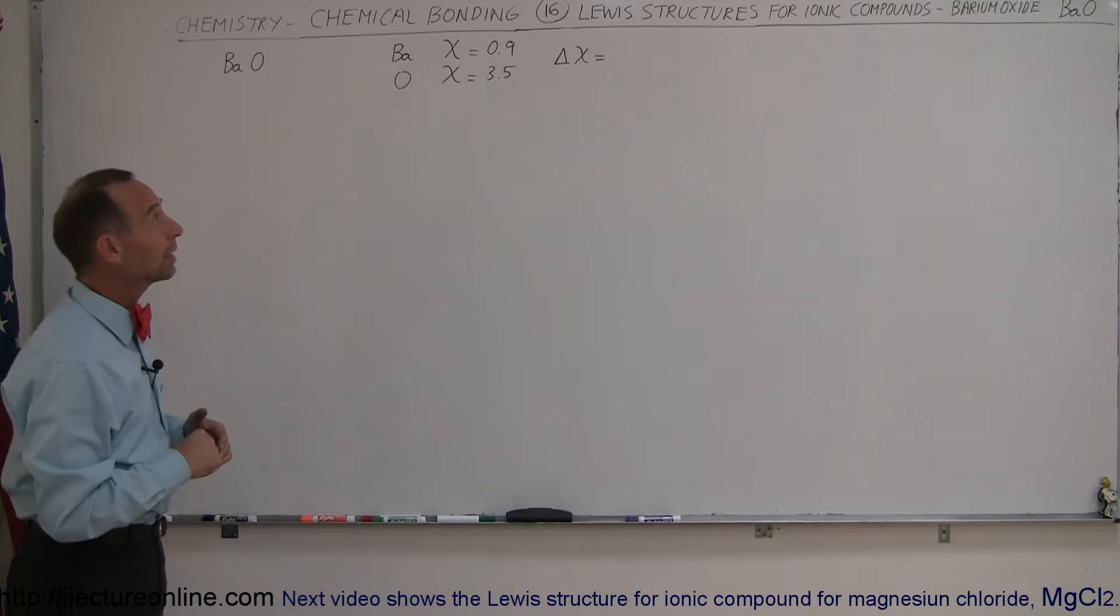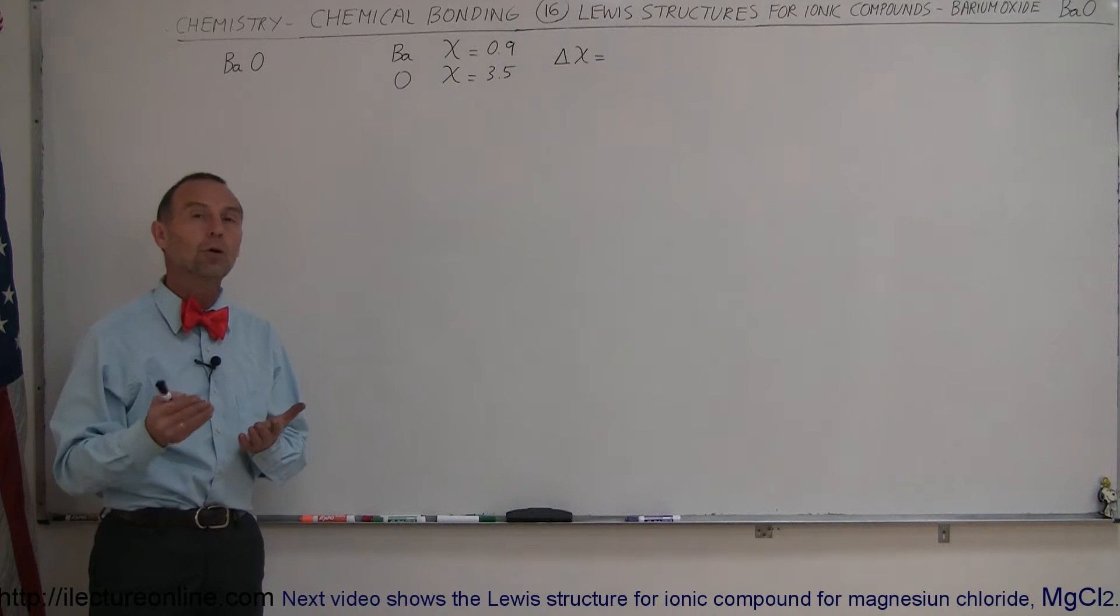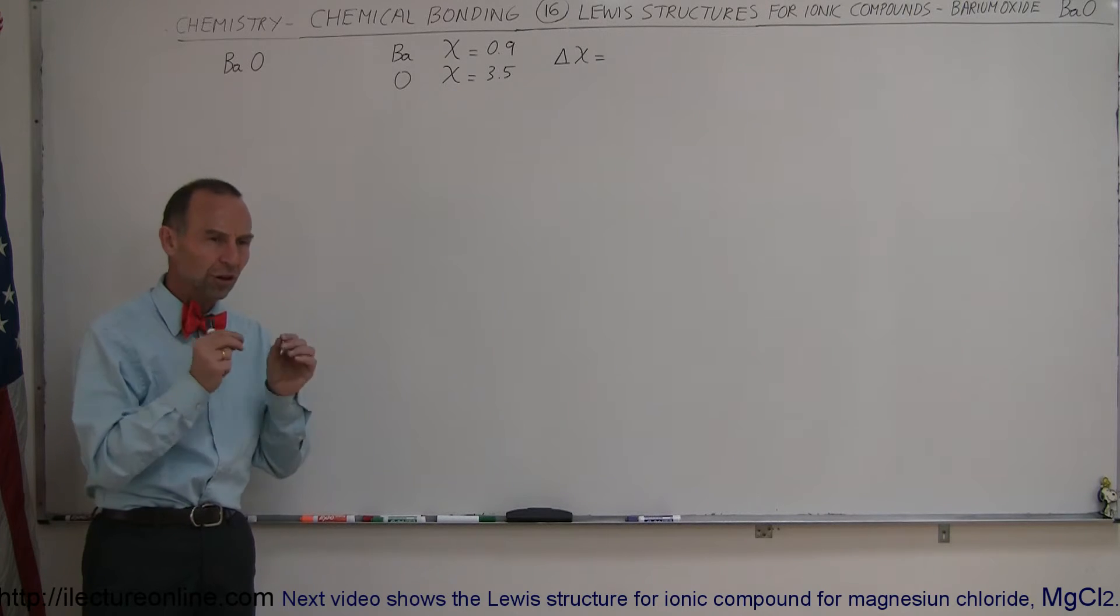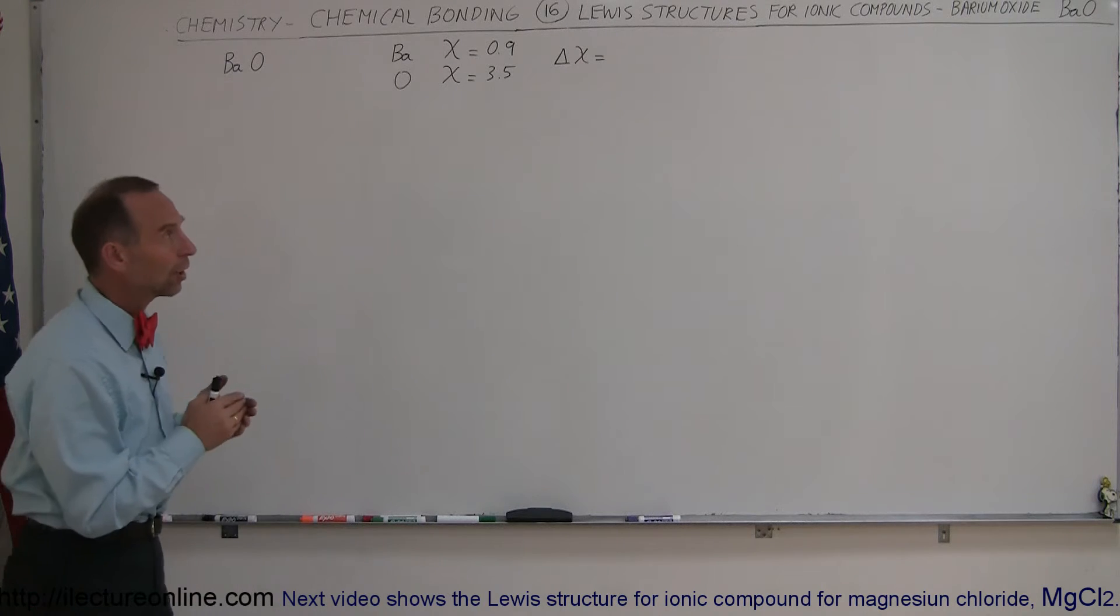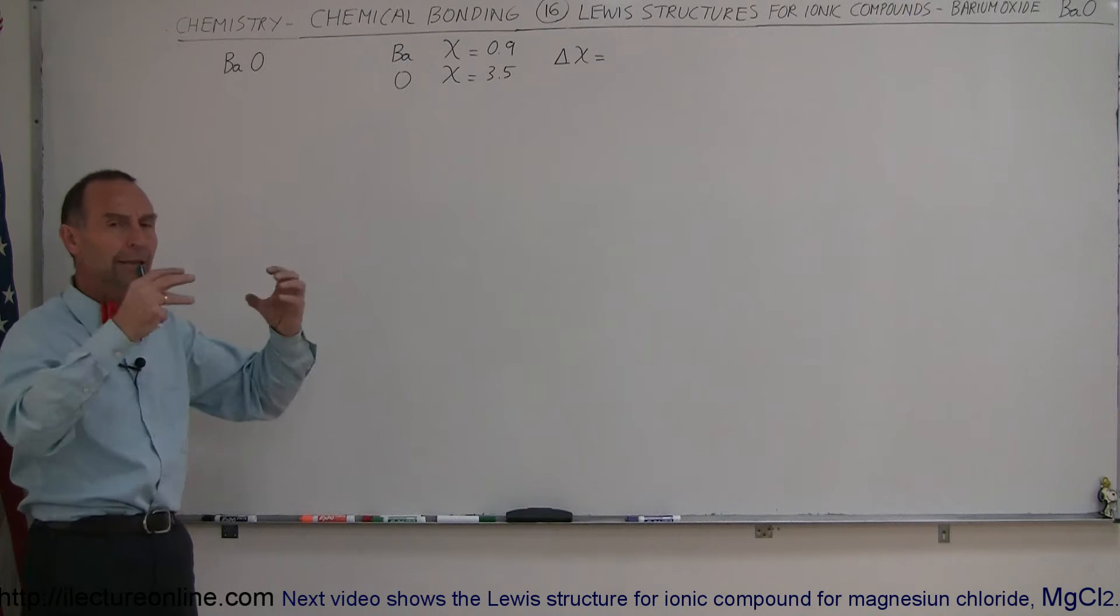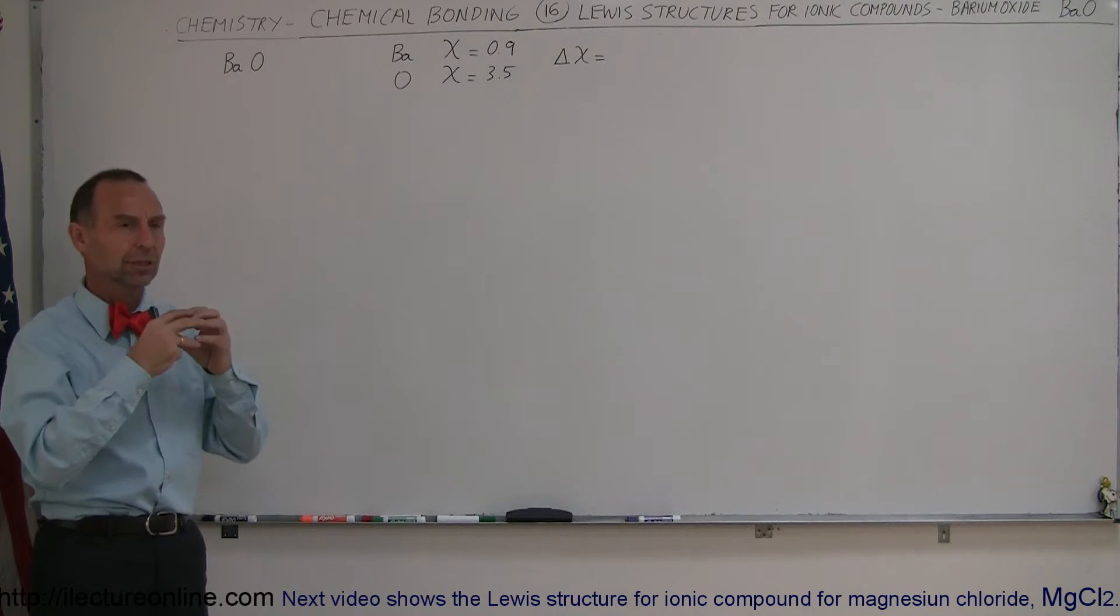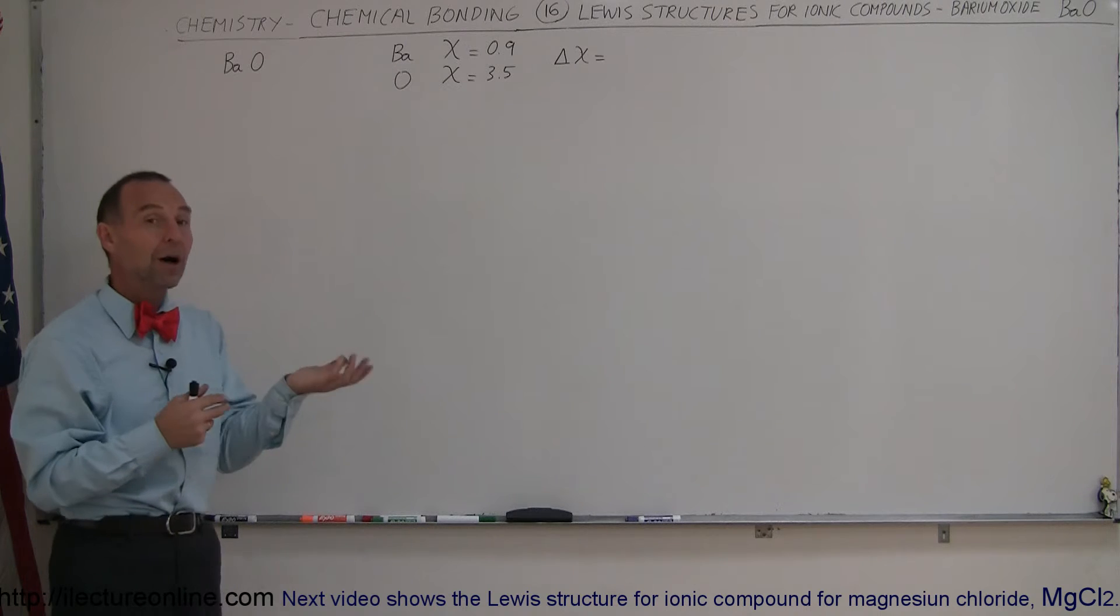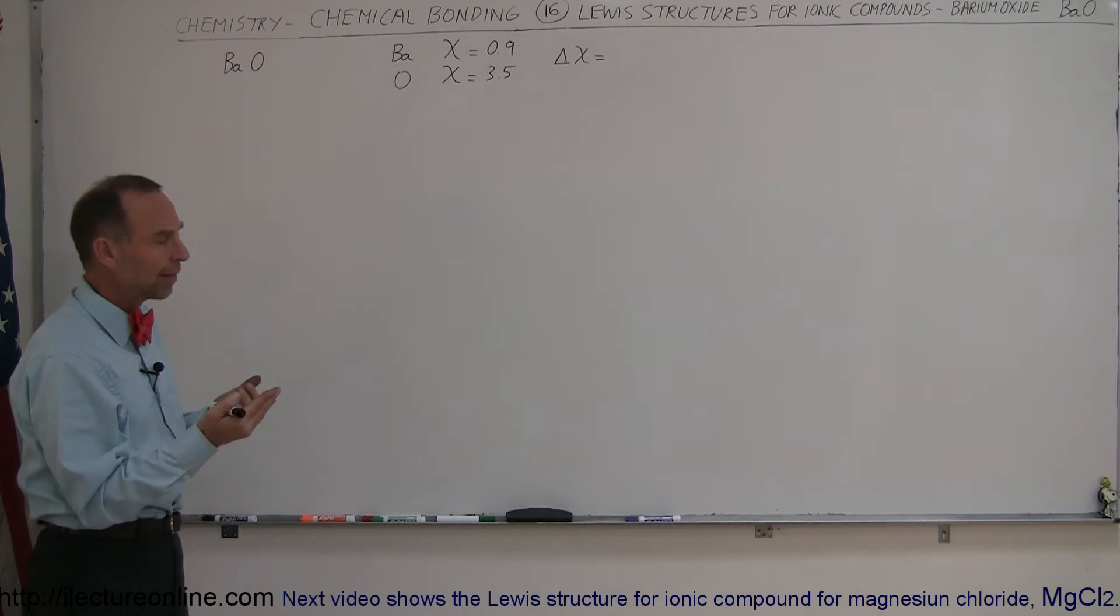Welcome to Electron Online. Here we're going to take a look at some Lewis structures for ionic compounds. These are not covalent compounds where sharing takes place. This is an ionic compound where an exchange of electrons takes place, and then the bonding occurs due to the electrical attraction between the positive ion and the negative ion.